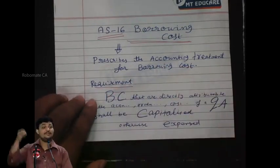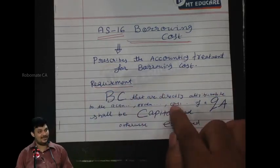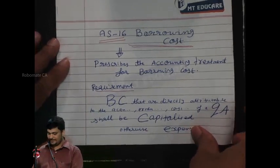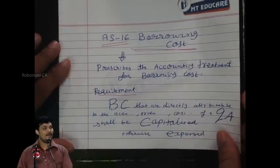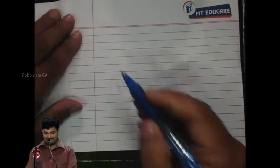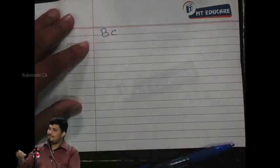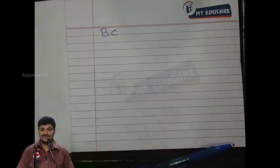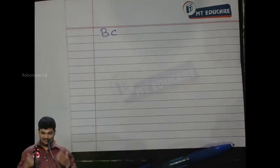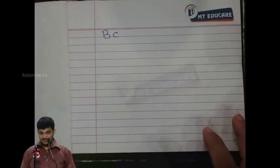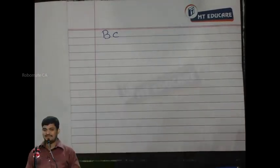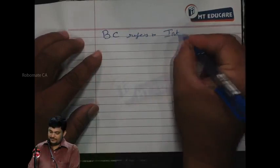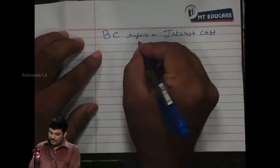Borrowing cost that are directly attributable to the acquisition, production, or construction of a qualifying asset shall be capitalized; otherwise they shall be expensed. So the first discussion is about borrowing costs. When we borrow money, primarily we pay interest. Borrowing cost refers to interest cost and includes the following components.